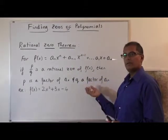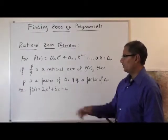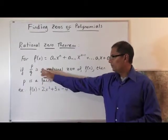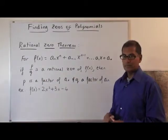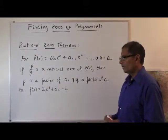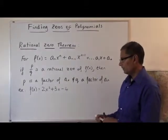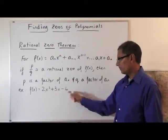So what this theorem does is it allows us to list possible rational zeros. Remember it says if this is a zero then this is true. It doesn't tell us that this will be a zero. So it allows us to find possible zeros of this function. Let's take an example. Here we have a polynomial 2x cubed plus 3x minus 4.